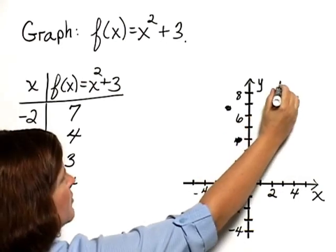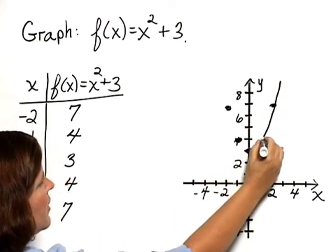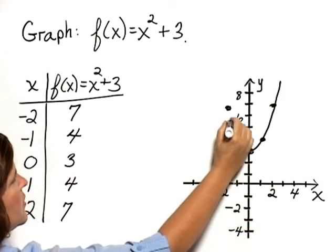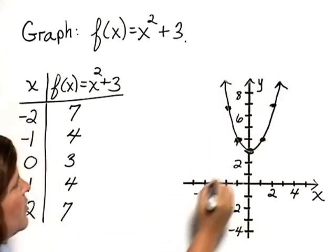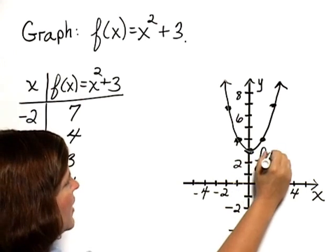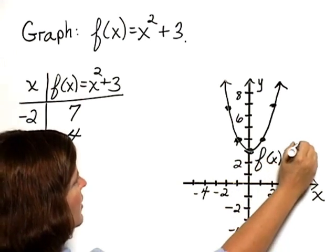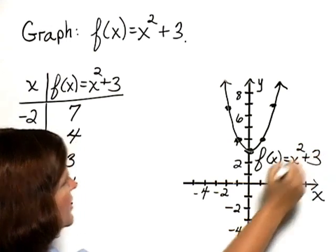Graphing, we'll see that we have something of the shape that comes down here, curves, and goes back up. And we label our graph f of x equals x squared plus 3.